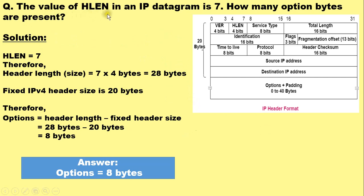The value of HLEN in an IP datagram is 7. How many option bytes are present? So here we are given the HLEN value as 7 and we are supposed to determine the number of bytes which are carried in the options part of the IPv4 datagram.